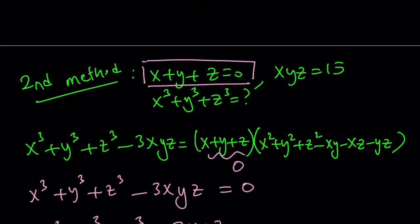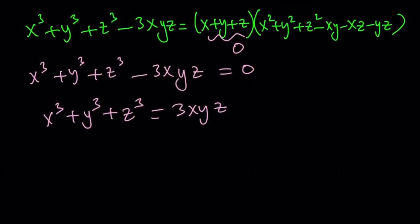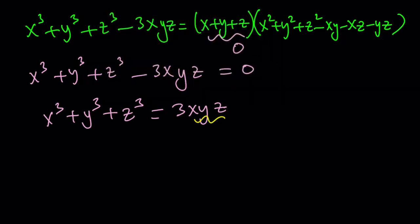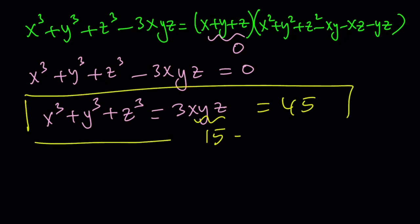And remember, we do know that xyz is equal to 15, the product. So we can basically replace xyz with 15. Let's go ahead and do that, and that gives us 45 as the answer, just like before. So let's go ahead and take a look at the third method, and we'll just conclude with that.